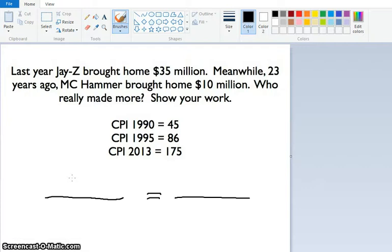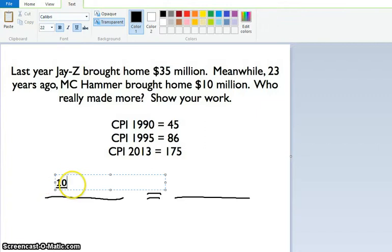So what we're going to do now is we're going to take MC Hammer's $10 million and inflate it into 2013 dollars. So what you're going to do, hopefully, or what you did hopefully, is on one side you put $10 million like this, and you put that right over his CPI, which was $45.